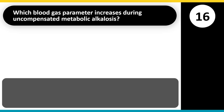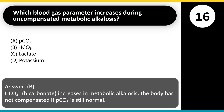Which blood gas parameter increases during uncompensated metabolic alkalosis? A. PCO2. B. HCO3. C. Lactate. D. Potassium. Answer: B. HCO3 (bicarbonate) increases in metabolic alkalosis. The body has not compensated if PCO2 is still normal.